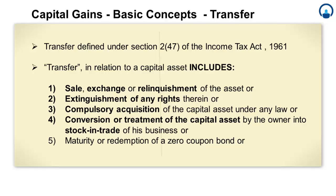First, let's understand what transfer means. The common definition of transfer is an act of moving something to another. Under the Income Tax Act 1961, transfer has been defined under Section 2(47). It says transfer in relation to a capital asset includes a list of activities. The key point here is that this is an inclusive definition, meaning that apart from what has been specifically listed, it shall also include what could normally be meant as transfer in relation to a capital asset.